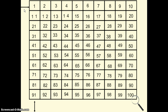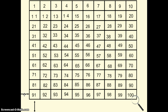When you look at a hundreds chart, the rows go side to side in groups of ten. Here's one row, two rows, three, row four, row five, row six, seven, eight, nine, and ten. A hundreds chart is made up of ten rows of ten.